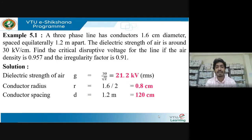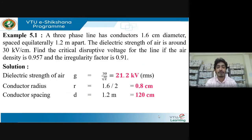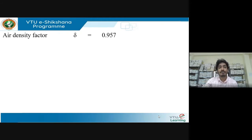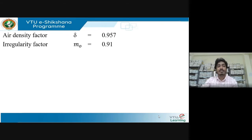Dielectric strength of air is given as 30 kV; divide by root 2 to get the RMS value, which corresponds to 21.2 kV. Conductor radius is found from the diameter: diameter is 1.6 cm, so radius is 0.8 cm. Spacing is 1.2 meters, which converts to 120 centimeters. Air density factor is 0.957 and irregularity factor is 0.91.